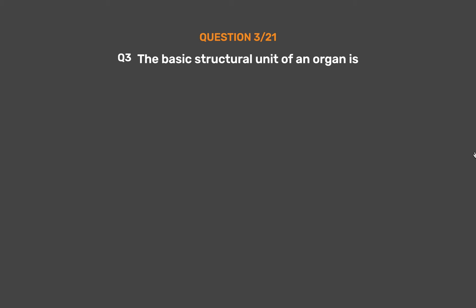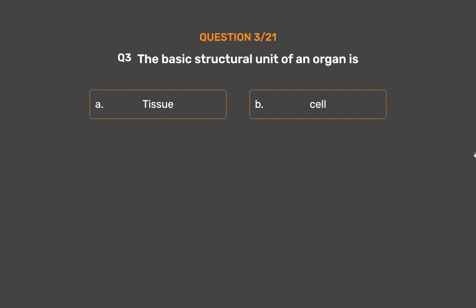Question No. 3: The basic structural unit of an organ is. Option A: Tissue. Option B: Cell. Option C: Organ. Option D: None of the above.